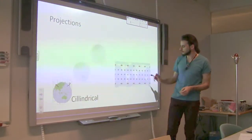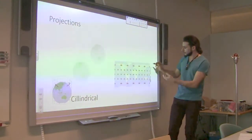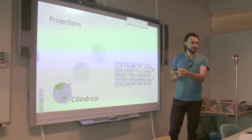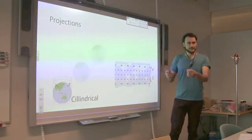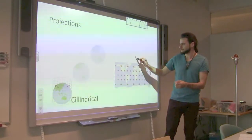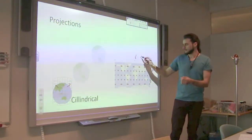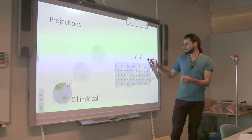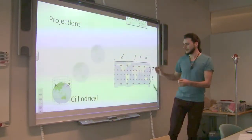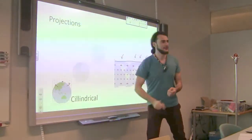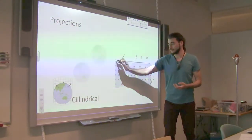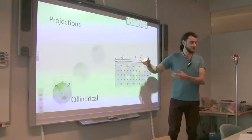They are stretched if you go more north into the northern hemisphere or more south into the southern hemisphere, in the horizontal direction. This should make sense because if you go to the extreme — the north pole — it is somewhere here. In fact, all of this top line actually corresponds to a single point on top of the Earth.